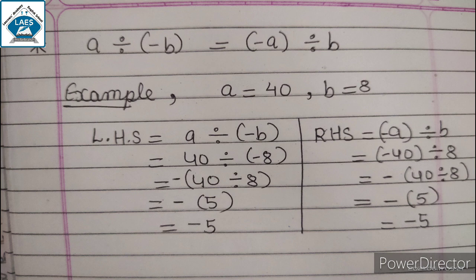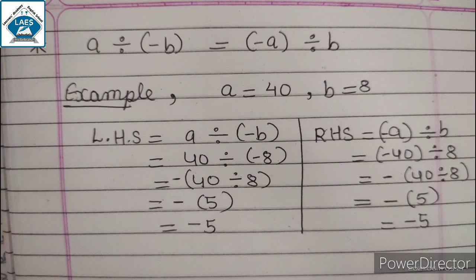So here we have to verify that A divided by minus B equals minus A divided by B. For example, A equals 40 and B equals 8. Left hand side equals A divided by minus B, that is 40 divided by minus 8. Taking minus common, we get minus of 40 divided by 8. Since 8 times 5 is 40, the answer is 5, so with the common minus, the answer is minus 5.